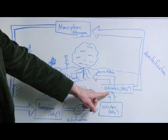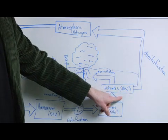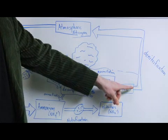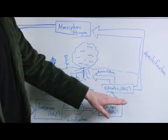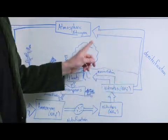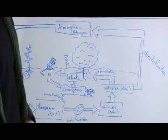The last major step, another type of bacteria turns nitrates through denitrification back into a gas and it re-enters the atmosphere and closes the cycle. This has been a brief discussion of the nitrogen cycle and the way that nitrogen moves through the environment.